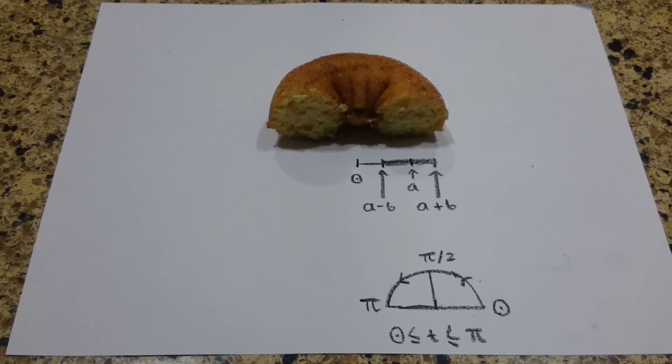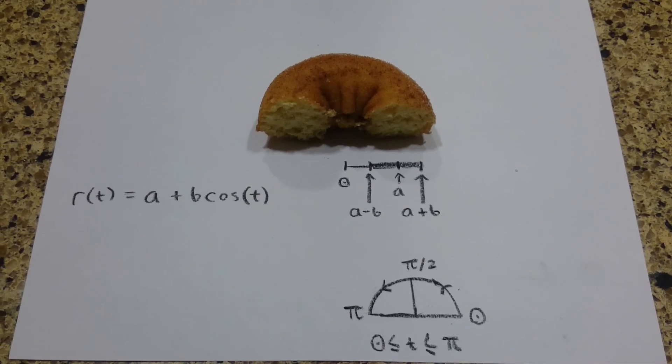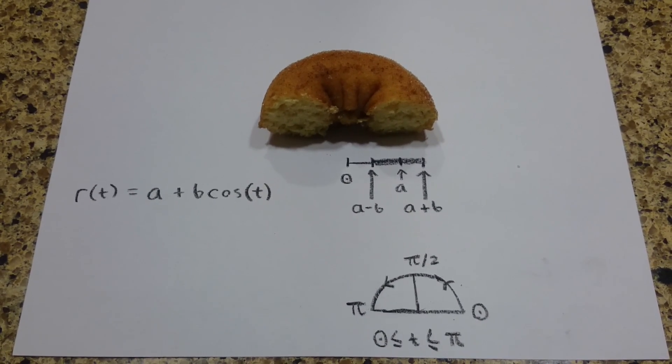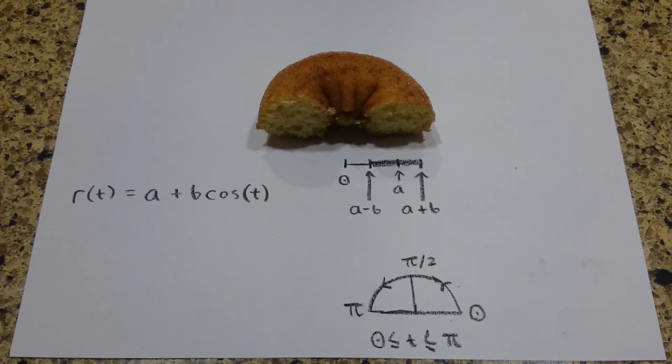This sounds a lot like cosine. Putting this into our equation, we get r equals a plus b cosine t.